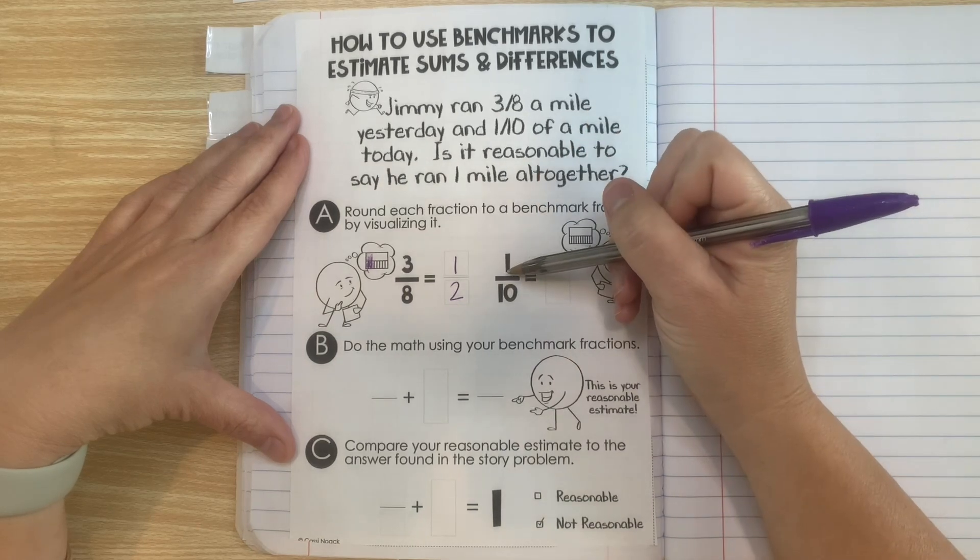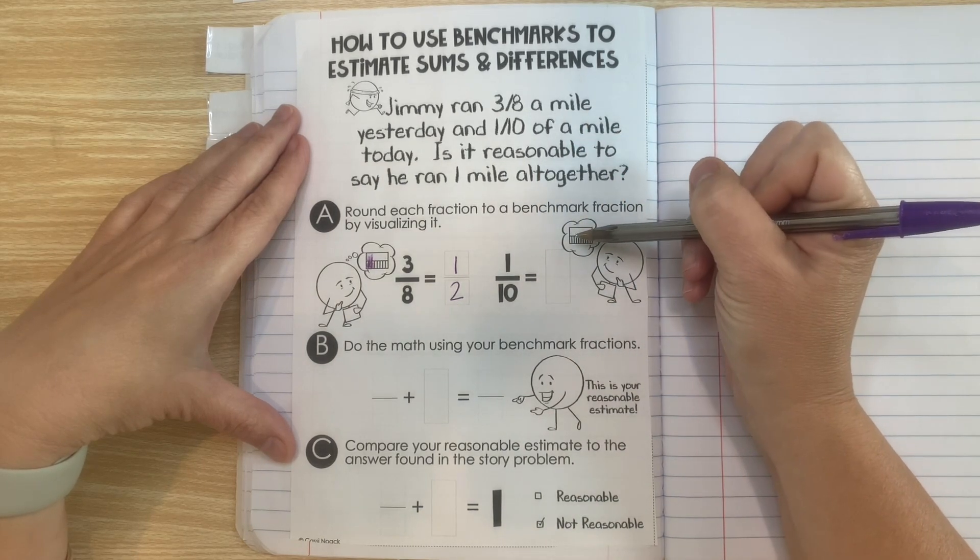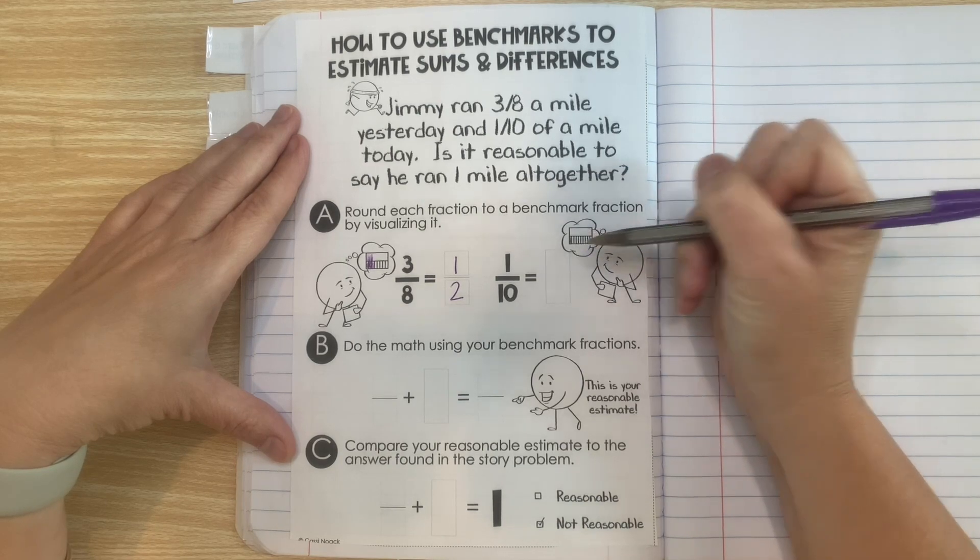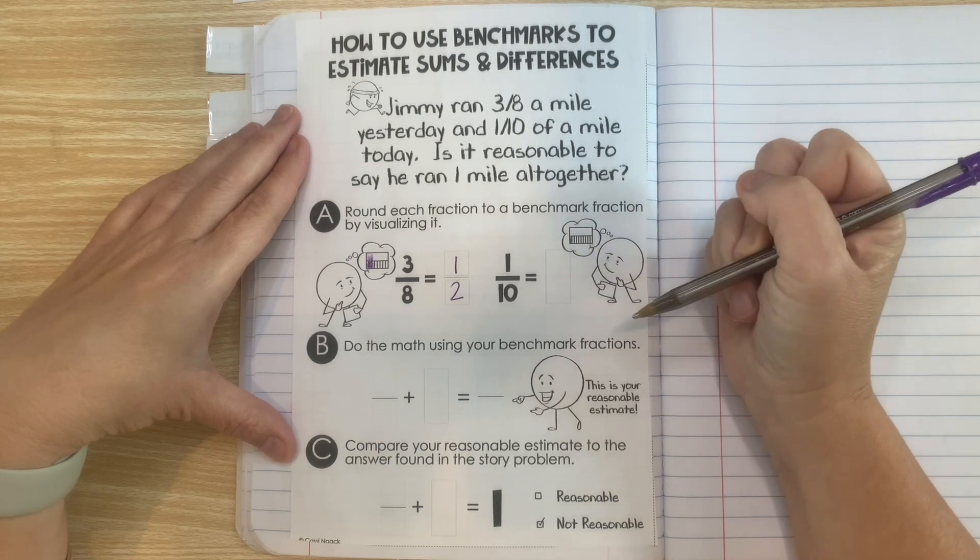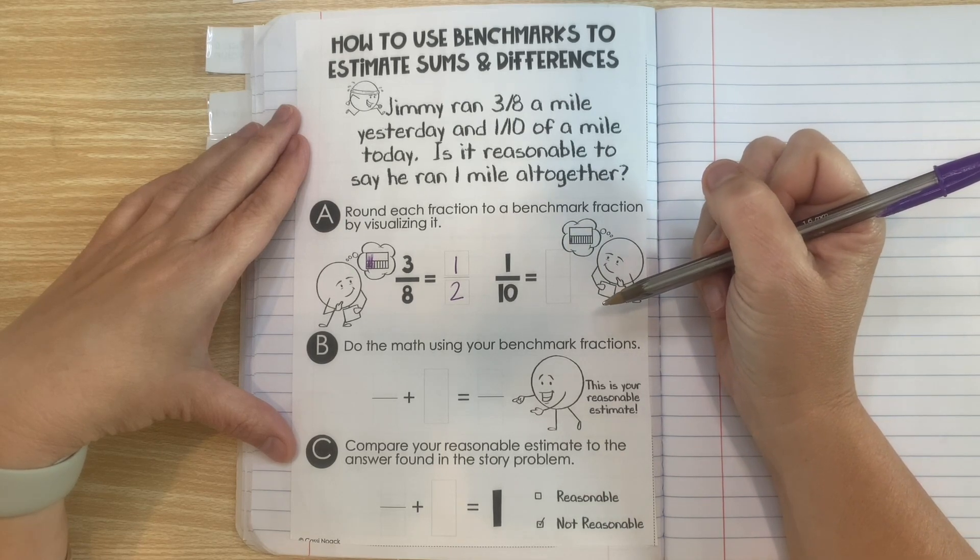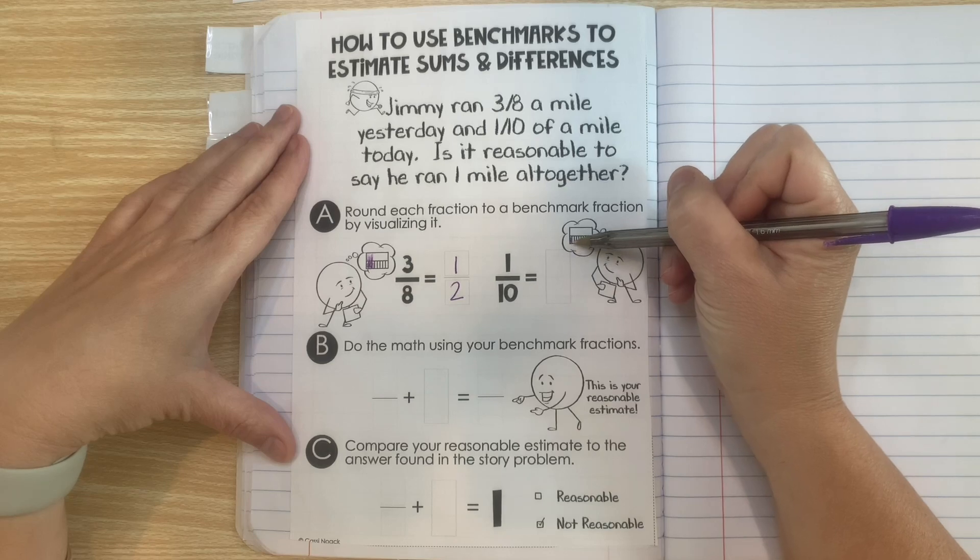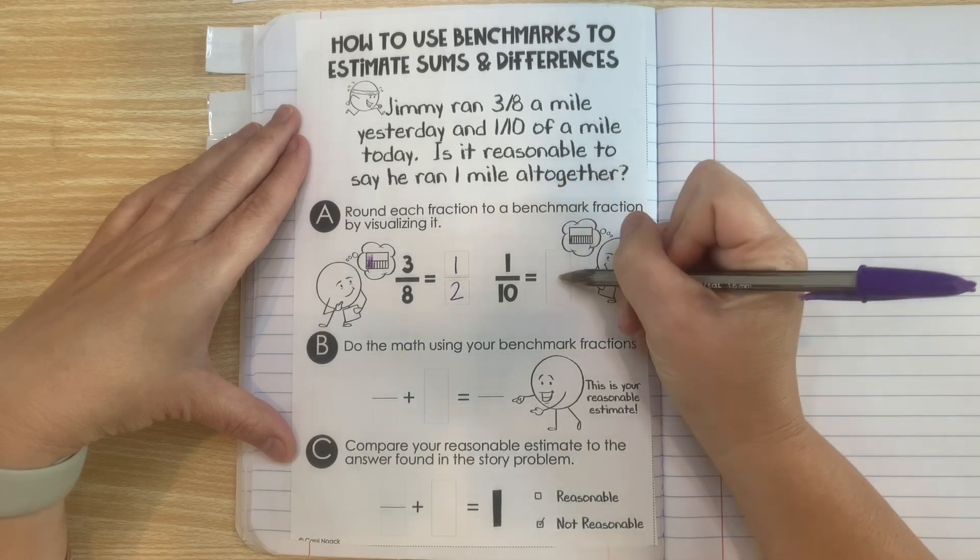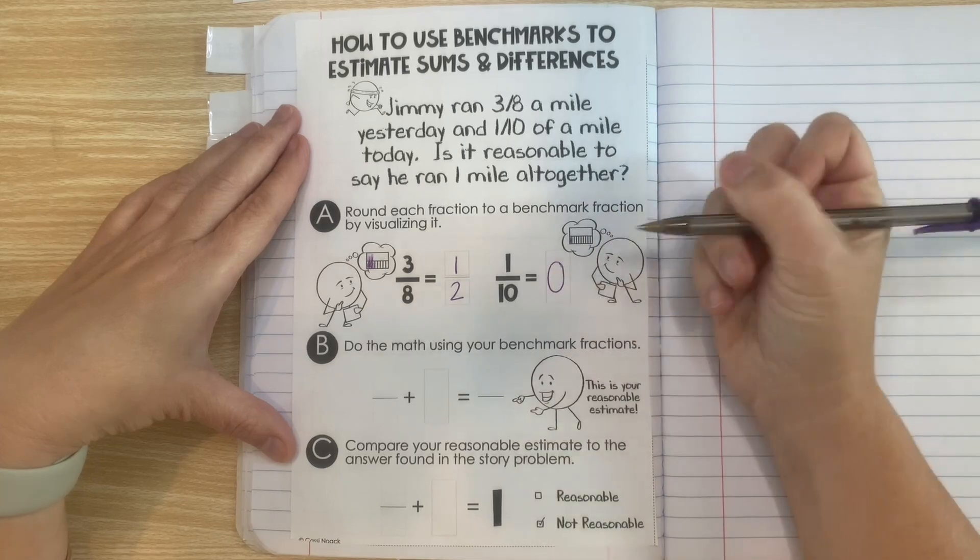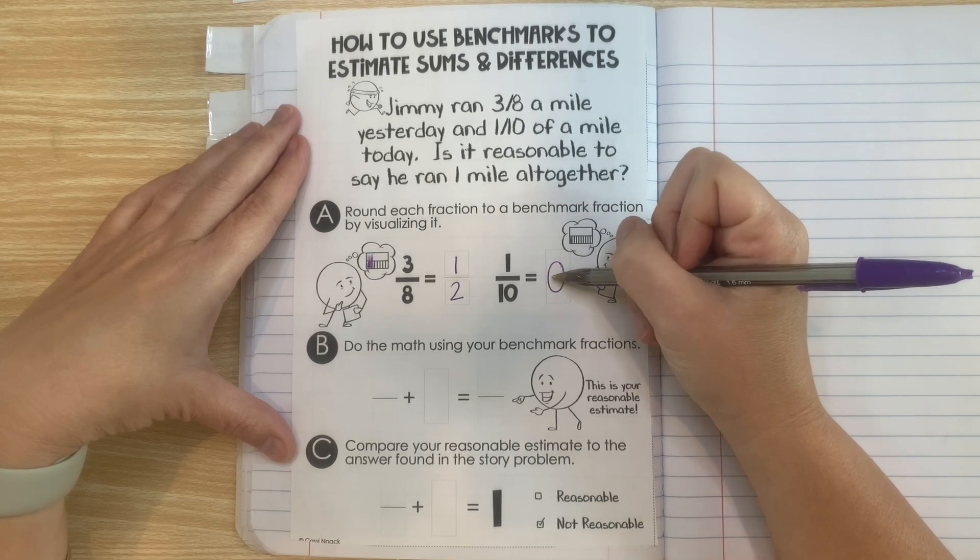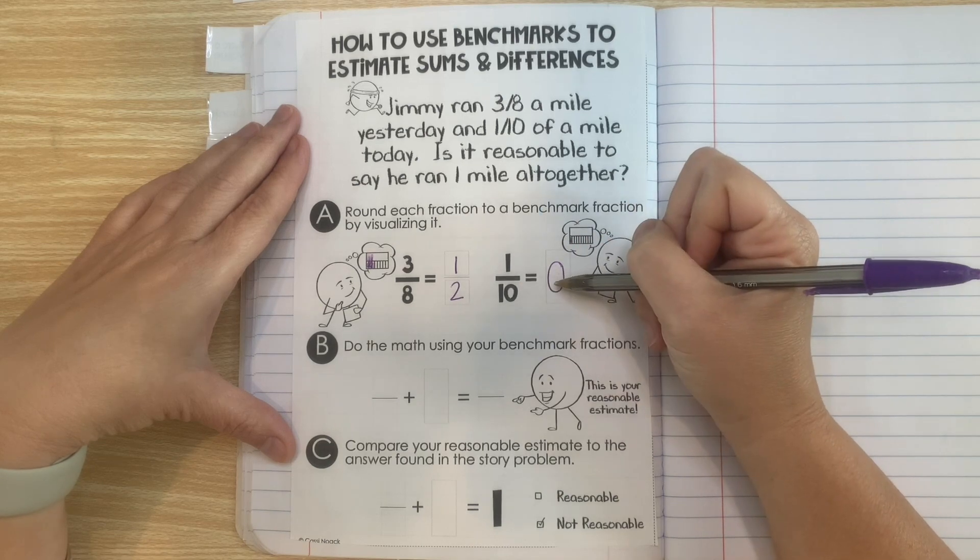So now let's do one-tenth. Well, if I have one-tenth, that means I'm only going to do one little bitty piece. One little bitty piece is probably closest to zero. Maybe it's close to one-fourth. Maybe that would work. But I think in this case, we could say that one-tenth would round to zero. The closest benchmark fraction to one-tenth is zero.